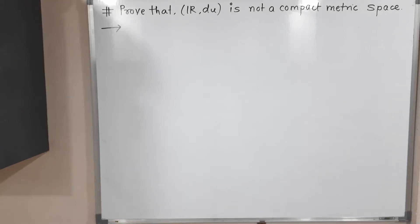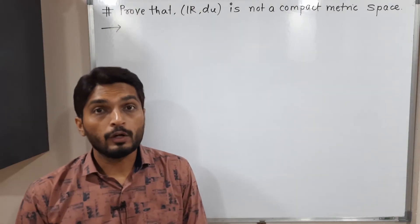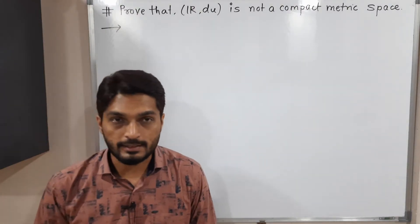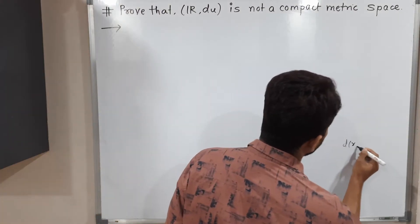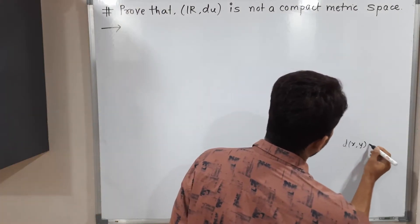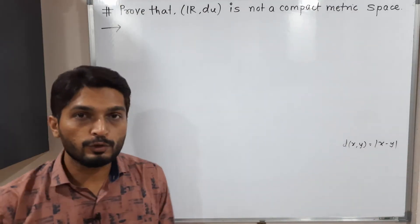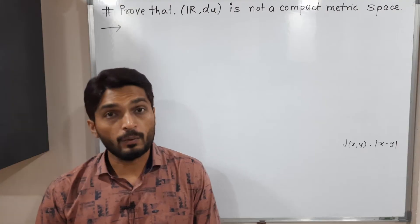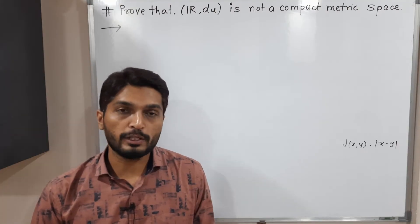Hi everyone. Let us discuss this example. We are going to prove that ℝ with the usual metric d_u is not a compact metric space. The usual metric is defined as d(x, y) = |x - y|. So we have this usual metric space ℝ, and we have to prove that it is not a compact metric space.